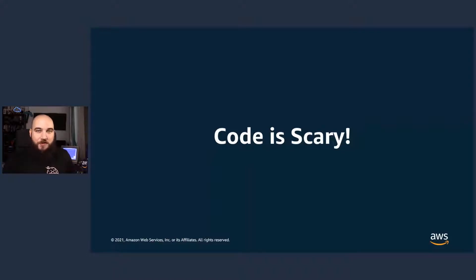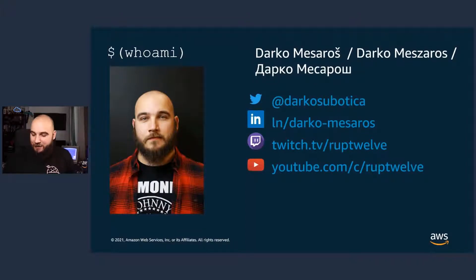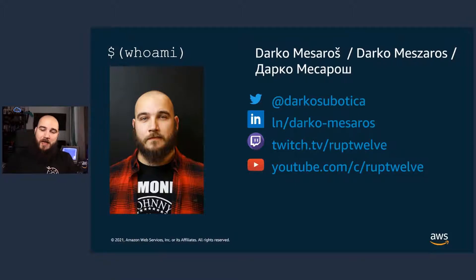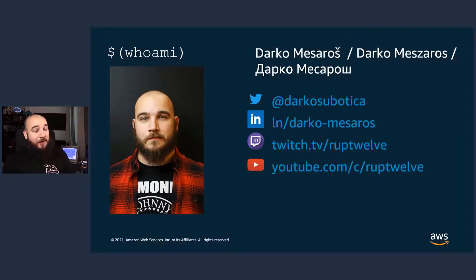Before I get into the rest of this presentation, allow me to tell you who this bald person is. My name is Darko Mesaros. I've been in IT operations for most of my life. I was that person with a hammer setting up servers and racks, patching Windows servers, rebooting Linux servers, configuring Java virtual application memory setups. I have a really big passion for automation because of that. I also happen to work for AWS as a developer advocate, and I'm currently based in Berlin, Germany.